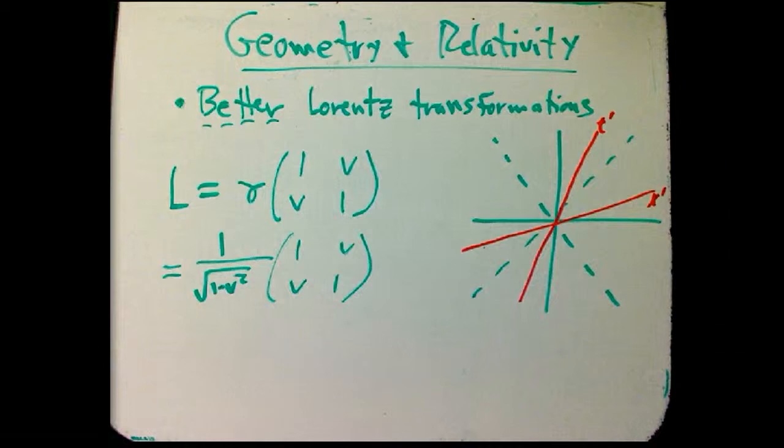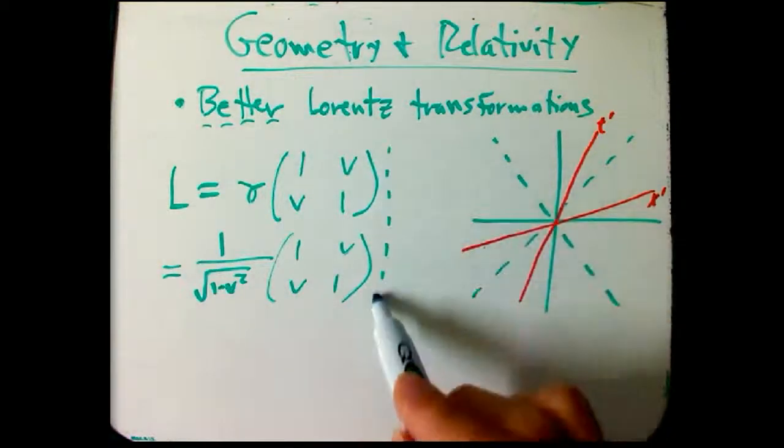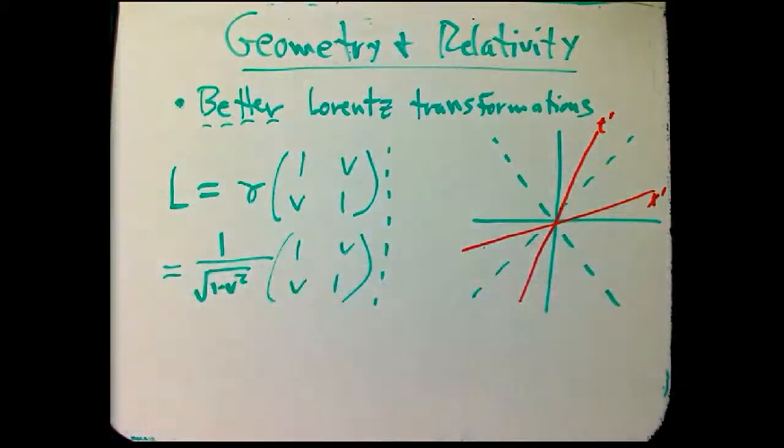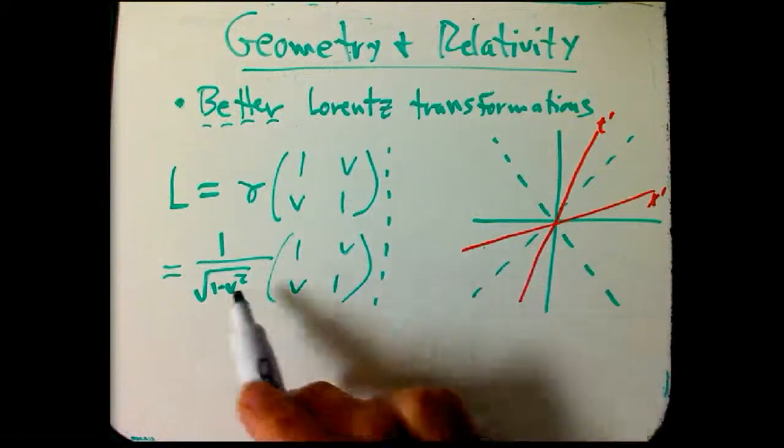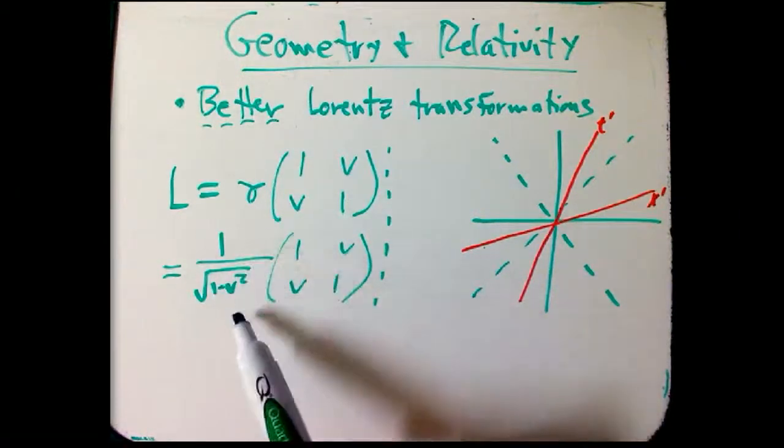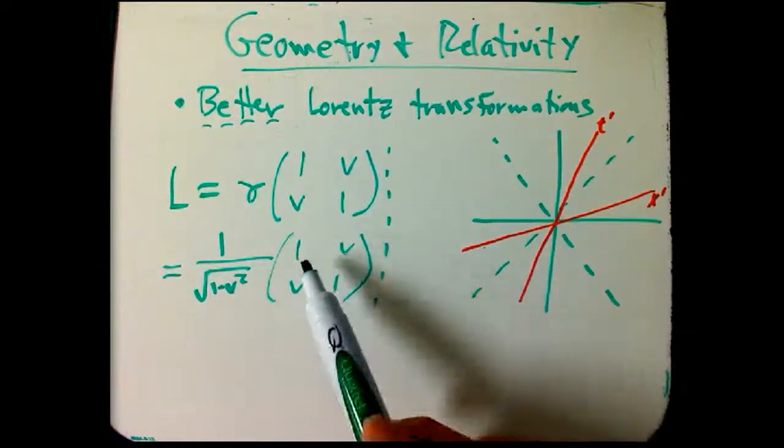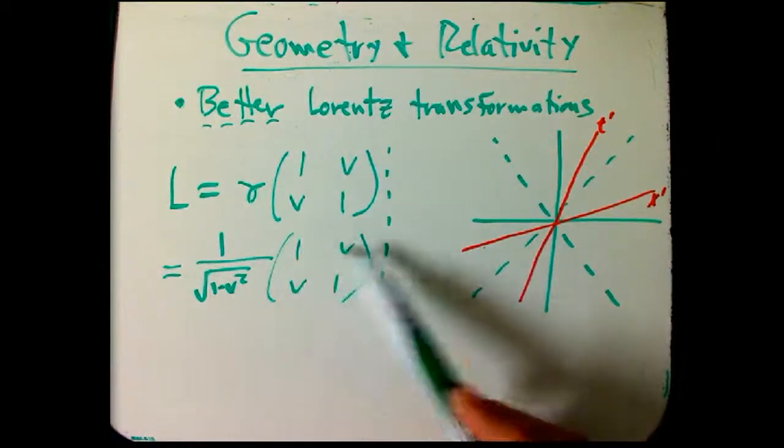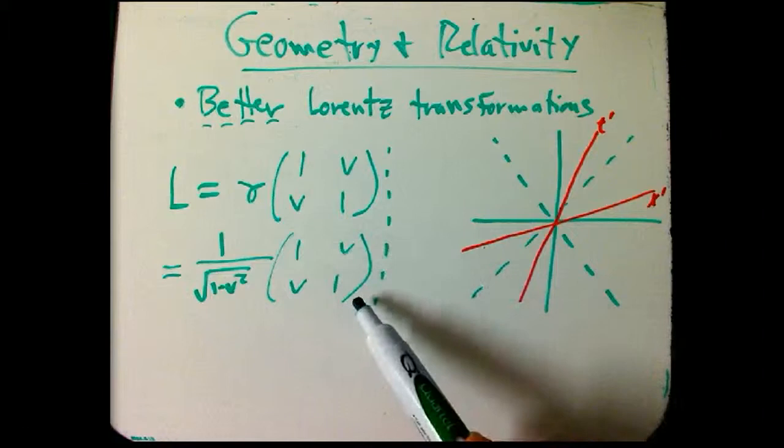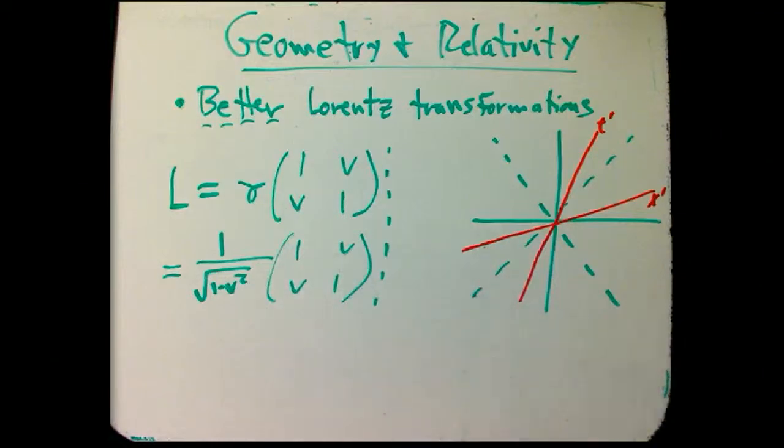I want to make one comment that's going to be necessary for a piece of the argument. This matrix has got this overall factor of gamma, 1 over root square root of 1 minus v squared, times 1vv1. There's a nice thing about this matrix: the columns and rows of this matrix are orthogonal unit vectors in the Minkowski sense.